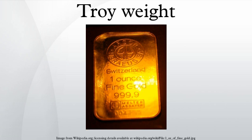Troy grain. Mint weights, also known as monies weights, were legalized by Act of Parliament dated July 17, 1649, entitled 'An Act touching the Monies and Coins of England.' A grain is twenty mites; a mite is twenty-four droites; a droite is twenty perites; a perite is twenty-four blanks.